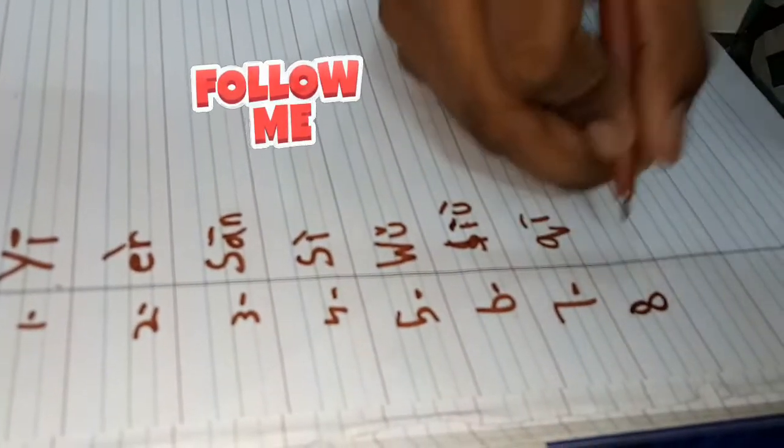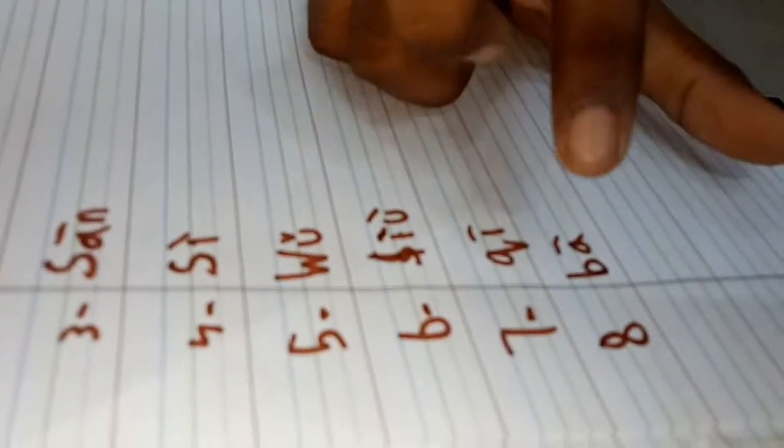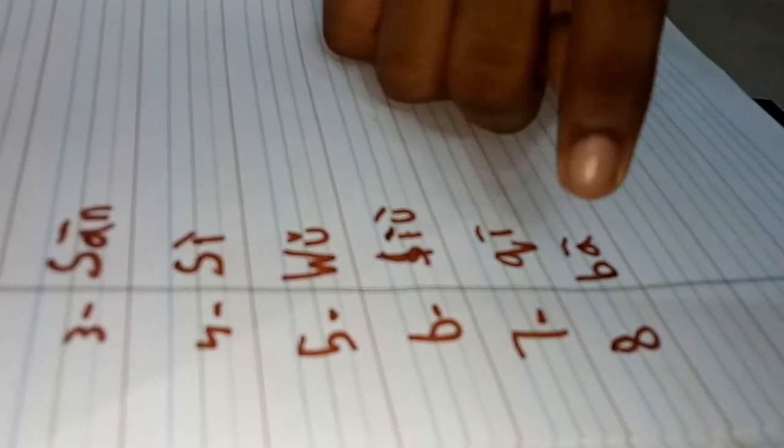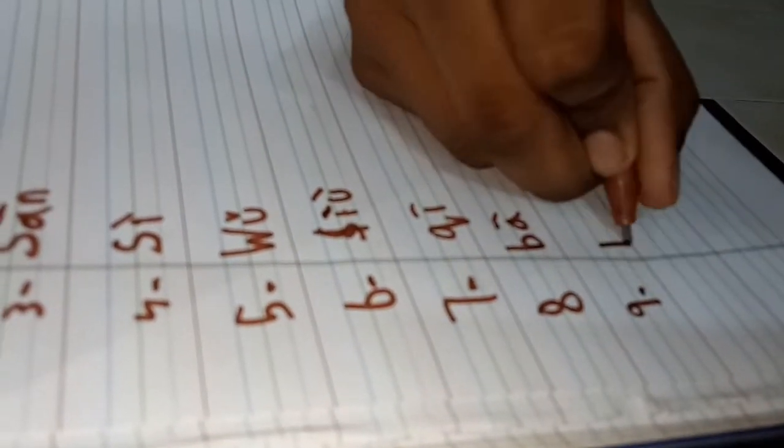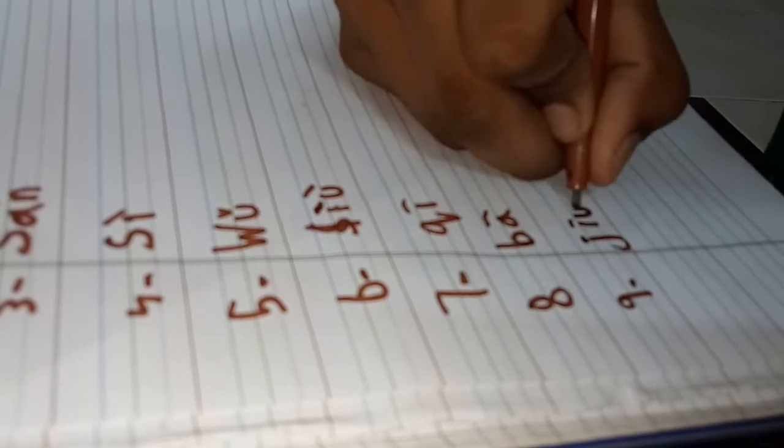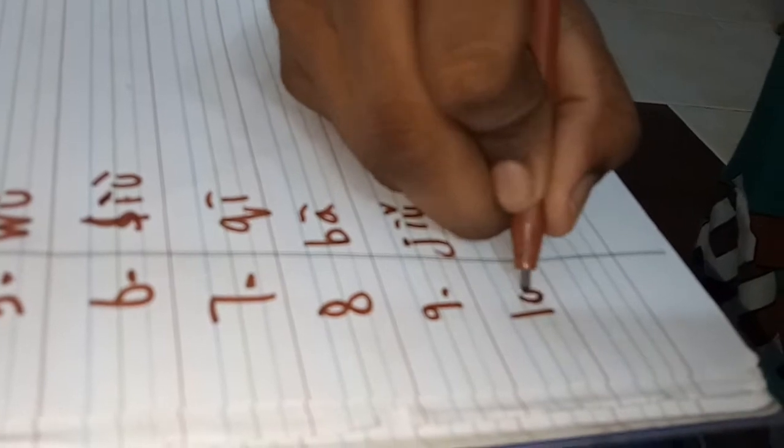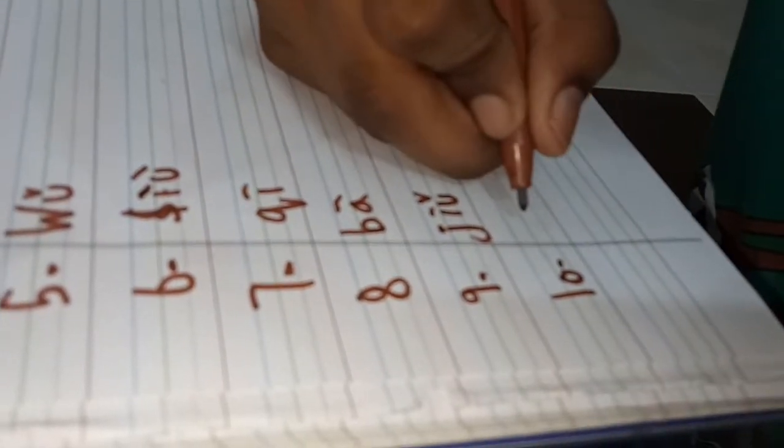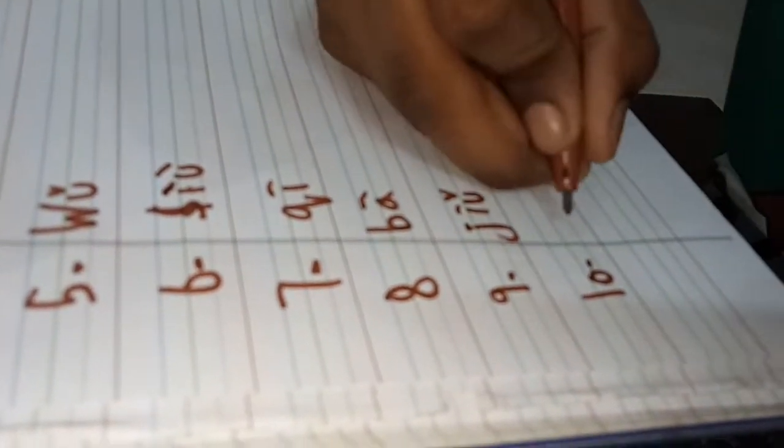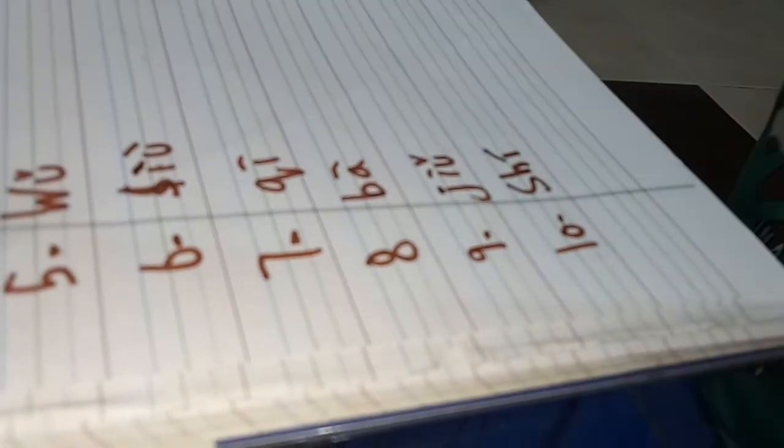Number eight is ba, or pa. It's ba, but we also say pa. Now nine is jiu, J-I-U. And the last one is ten, which is shi. Say it like this: shi.